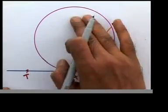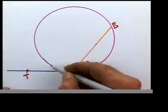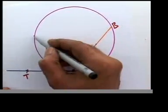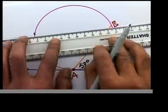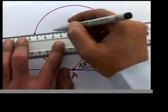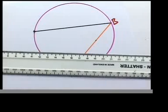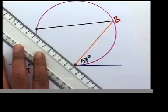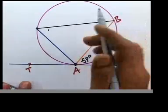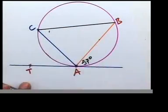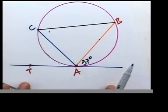Now, make an angle in the alternate segment using this chord AB. You can choose any point on this pink arc. Let's choose a point there — call it C — and join C to B and C to A. We've now formed an angle ACB using chord AB in the alternate segment. Let's measure this angle at C.